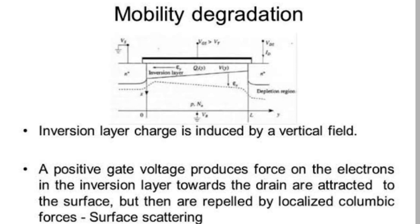A positive gate voltage produces force on the electrons in the inversion layer towards the drain, attracting them to the surface, but then they are repelled by localized coulombic forces. This is called surface scattering. Surface scattering reduces mobility. The mobility is reduced.